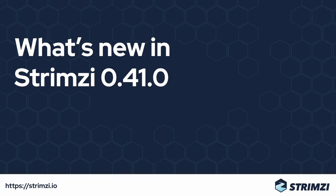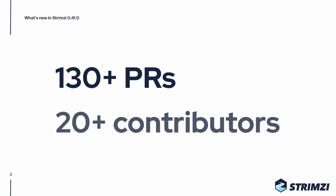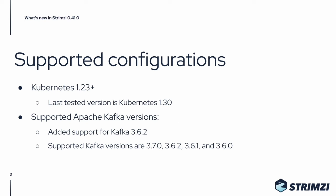We have released Strimzi 0.41 and in this video we will take you through the main new features. This release has over 130 PRs from over 20 contributors. It supports Kubernetes 1.23 and newer. The last released Kubernetes version at the time of releasing Strimzi 0.41 was Kubernetes 1.30.